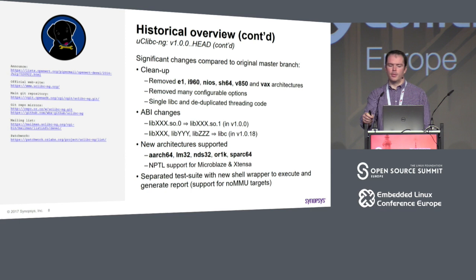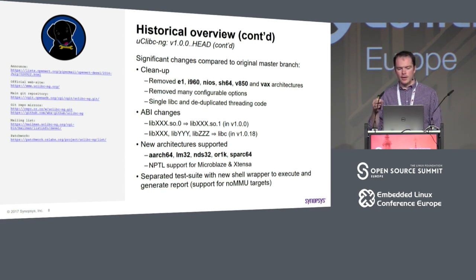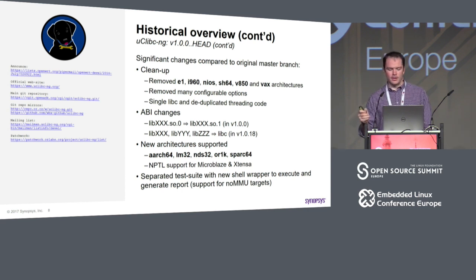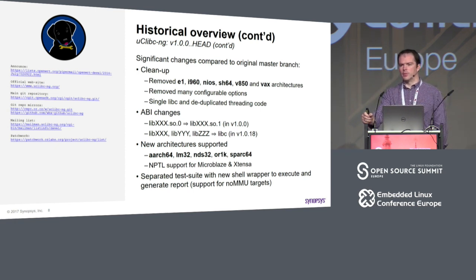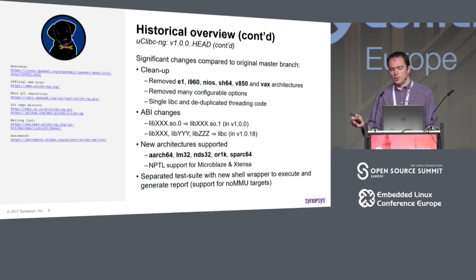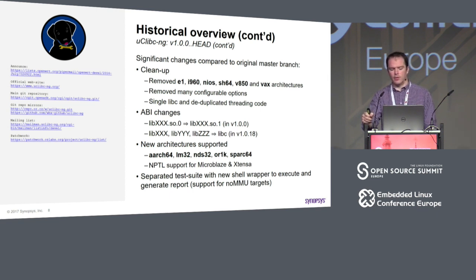With the library merge we got a couple of major changes - ABI changed when we bumped the version from 0.9 to 1.something, library names are now different, which causes some problems I'll address later. We now have support for more architectures, which is beneficial - 64-bit ARM is very nice as it is a very emerging architecture. Some others like Lattice, Andes, and SPARC64 are also added. NPTL support was added to Microblaze and Xtensa, which means a wide range of different applications can now be used on these platforms.